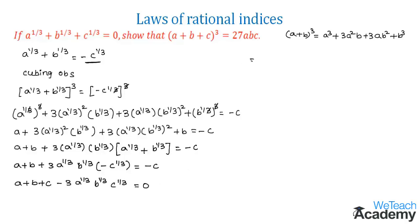Transferring the last term to the right hand side, we get a plus b plus c is equal to 3 into a power 1 by 3 into b power 1 by 3 into c power 1 by 3.